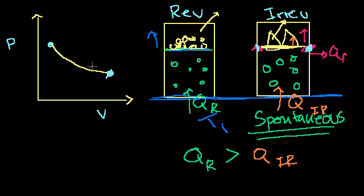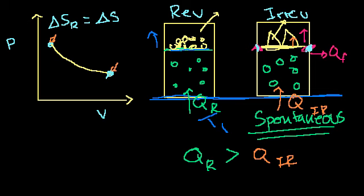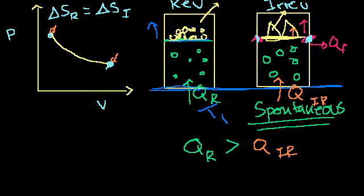Now what is the change in entropy for both systems? Well, they both started at the same point and ended at the same point. And entropy is a state variable, so the change in entropy for the irreversible process is going to be equal to the change in entropy for the reversible process. Now what is the total change in entropy of the universe for the reversible process? Our universe here is the reservoir plus our system.